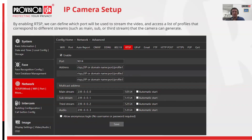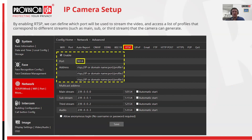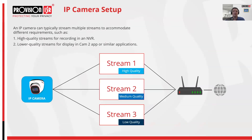In the first step, we'll configure a camera to stream using the RTSP protocol, which is compatible with the VLC player. To begin, we'll access the camera's network settings, enable the RTSP protocol, and specify the port for transmission. When connecting to the camera through the player, it's important to select the transmission profile we intend to use. Each profile represents a specific broadcasting quality setting tailored to different needs. Each camera, when transmitting over the network, can broadcast in multiple streams, each offering varying qualities of video.